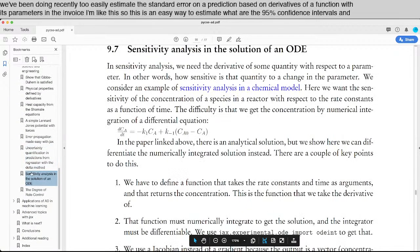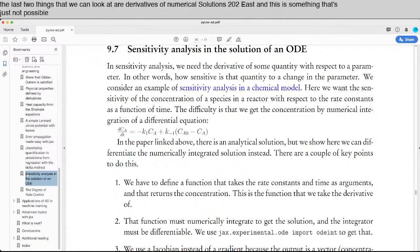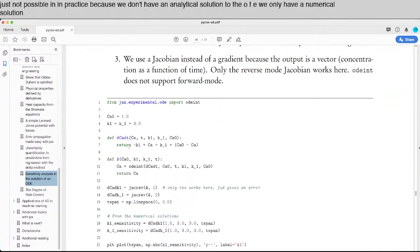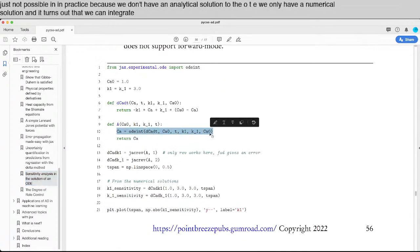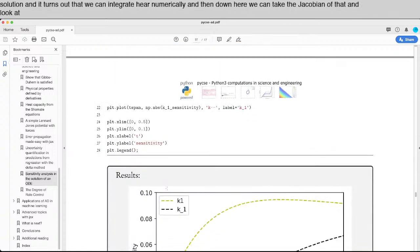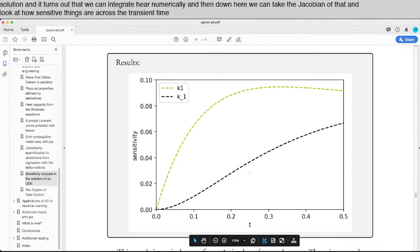And the last two things that we can look at are derivatives of numerical solutions to ODEs. And this is something that's just not possible in practice because we don't have an analytical solution to the ODE. We only have a numerical solution. And it turns out that we can integrate here numerically, and then down here we can take the Jacobian of that and look at how sensitive things are across the transient time of the solution.